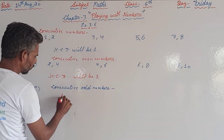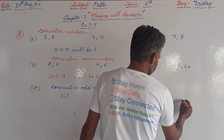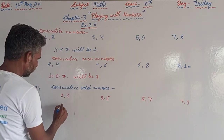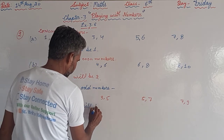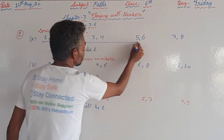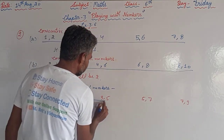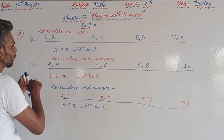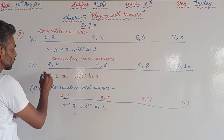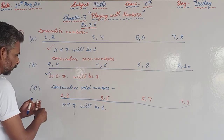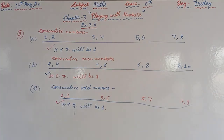For part (c): consecutive odd numbers — for example, 1,3 or 3,5 or 5,7 or 7,9. For consecutive odd numbers, the HCF will be 1 only. So: HCF = 1 for consecutive numbers, HCF = 2 for consecutive even numbers, and HCF = 1 for consecutive odd numbers.